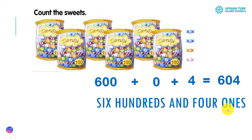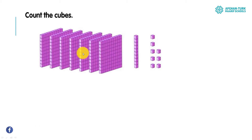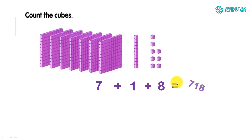Now we have these blocks. All of them represent 100: 100, 200, 300, 400, 500, 600, 700 — we have 700. Plus, it stands for 10. Plus how many ones? How many blocks do we have? 1, 2, 3, 4, 5, 6, 7, 8 — we have 8 ones. That equals 700 and 18. We write it like this: 718.